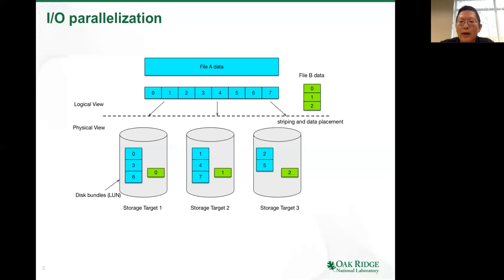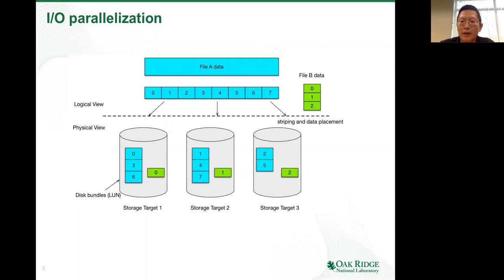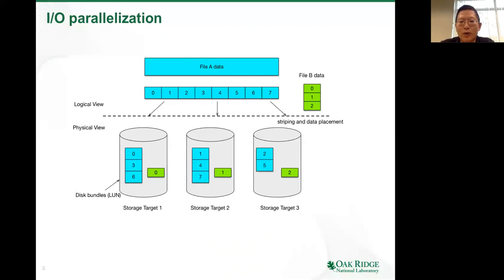The stripe configuration can have major implications on performance. For example, if the default striping width is one and you take it as-is without modification, it doesn't matter how many processes your application has — you're going to be bounded by the performance of that single storage target. If you've worked with Lustre, you might relate the storage target as the OST and the software running on top of it as the OSS. If you come from the GPFS world, it's more akin to what they call the network-shared disk and NSD server. This general concept of the striping pattern is applicable across the board.